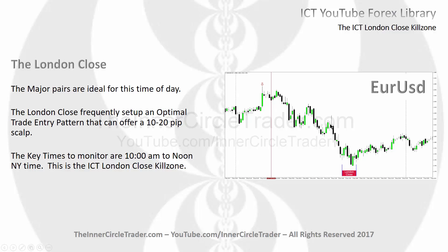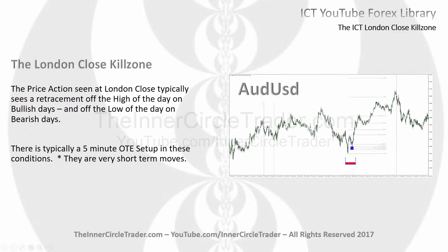Another example here — this is the Euro Dollar, just to show you how the London Close encapsulates the daily range. We have the Asian range in here; the high created during the Asian market traded this pair. The high forms in Asia, then after New York midnight time we had a high form again — London high, New York session high — and then the low of the day forms exactly at the parameters between 10 a.m. and noon New York time. This is the ICT London Close Kill Zone. Market trades higher off that window of time and then goes into the close.